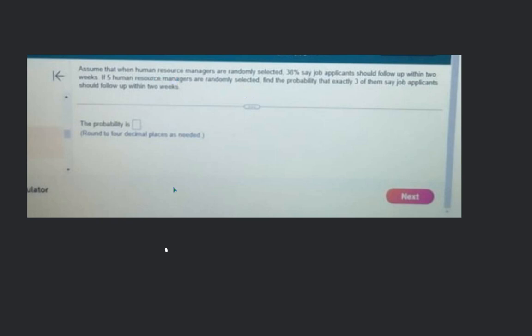So assuming that when human resource managers are randomly selected, 38% say job applicants should follow up within two weeks. If five human resource managers are randomly selected, number of people selected is equivalent to five, right? Find the probability that exactly three of them say job applicants should follow up within two weeks. And this is 38%, right?